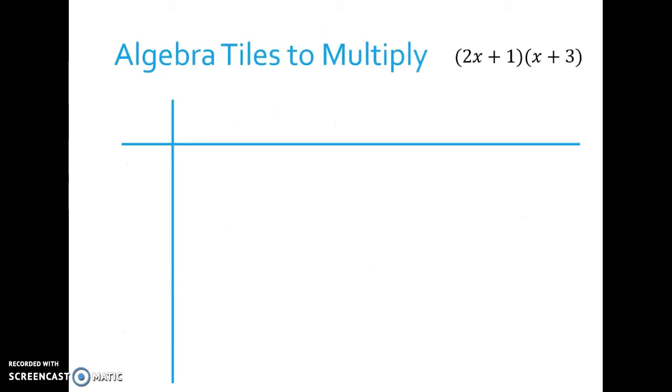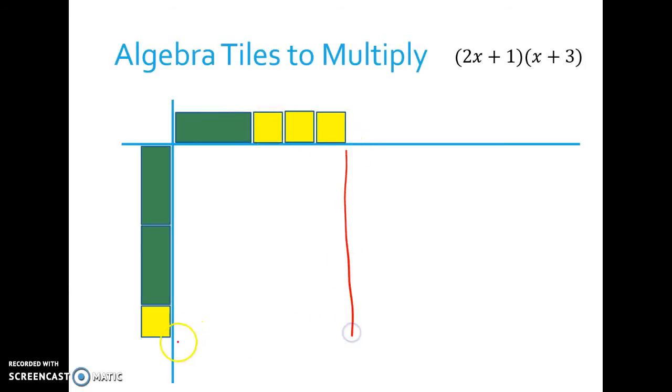We're next going to use algebra tiles to multiply polynomials. And what you do when you're multiplying polynomials is you think of area. So 2x plus 1 will be one dimension, and x plus 3 will be the other dimension. So I chose to make 2x plus 1 be the height of my rectangle. So I built the polynomial 2x plus 1, which means I had two skinny x blocks and one unit block. And then for the width of my rectangle, I made it x plus 3, so one skinny x block and then three unit blocks. And then with tiles, I'm going to try to fill in this area without leaving any gaps. And that will be the answer to my multiplication problem, because length times width will give me the area.